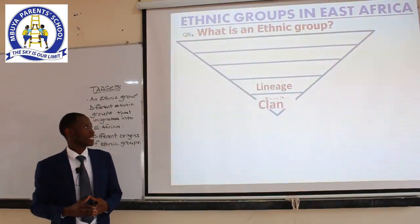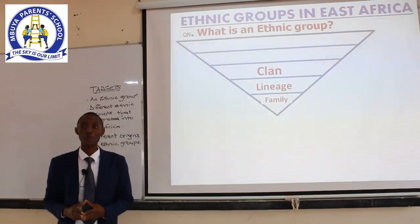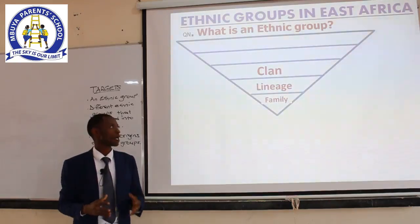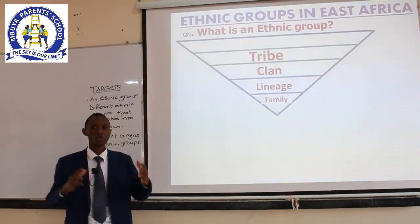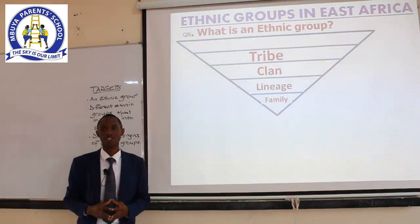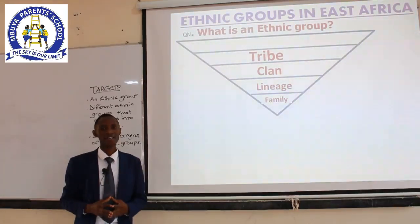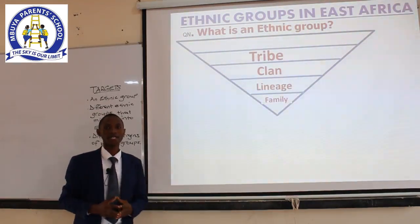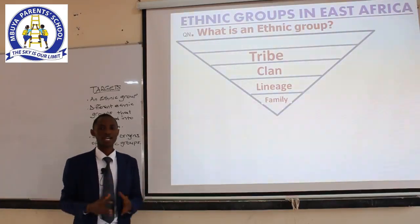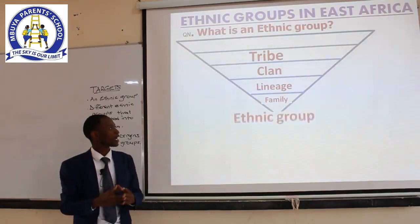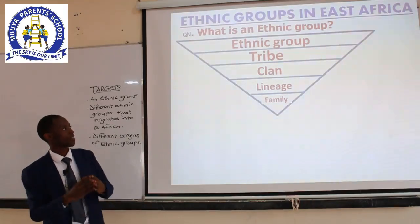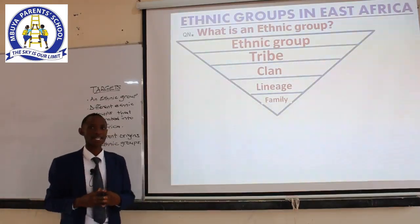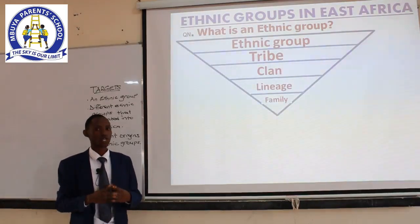The lineage is made up of very many families. When you combine all the lineages, you come to what we call a clan. A clan is a group of lineages, or a group of people with the same totem. When you combine very many clans, you come up with a tribe — a group of people speaking the same language. For example, we have more than 50 tribes in Uganda: Baganda, Batoro, Banyankore, Bachiga, and very many others. The tribe comes as a result of a combination of very many clans, and then we get a big group of people made up of very many tribes, which is what we call an ethnic group.